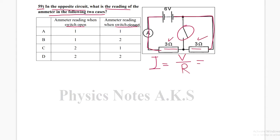Since they are in series, we add them, so 6 divided by 3 plus 3 is going to be 1 ampere. So when the switch is open, it's 1A.